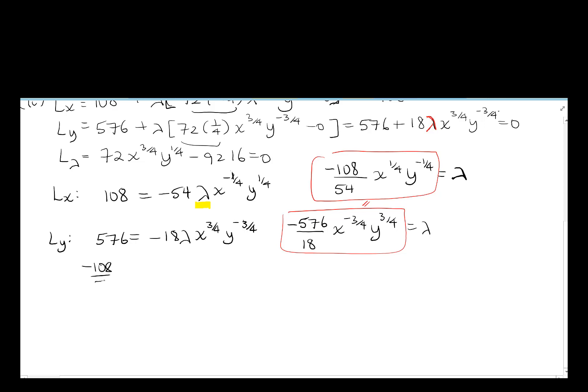So now, -108 over 54, x^(1/4)y^(-1/4) equals -576 over 18, x^(-3/4)y^(3/4). And 576 divided by 18 becomes 32, 108 divided by 54 becomes 2, and I'm going to move all of the x's to the left side, all of the y's to the right side, and I get 2x equals 32y. Divide both sides by 2, and x equals 16y.